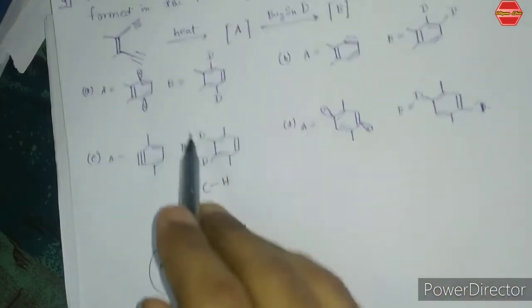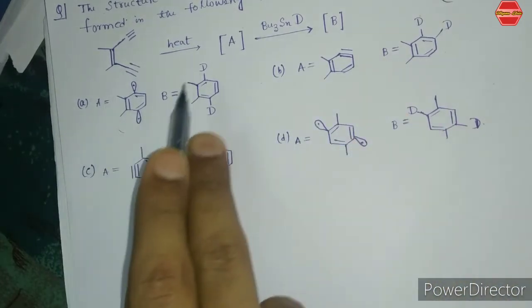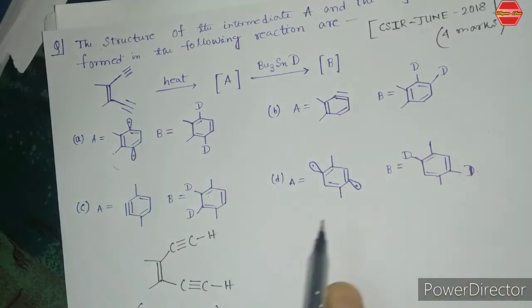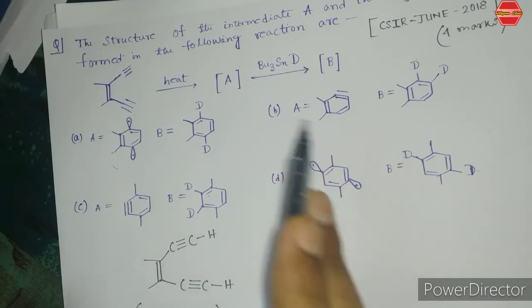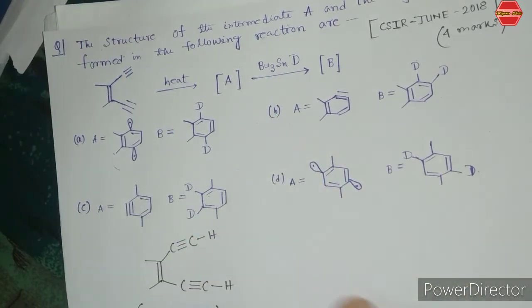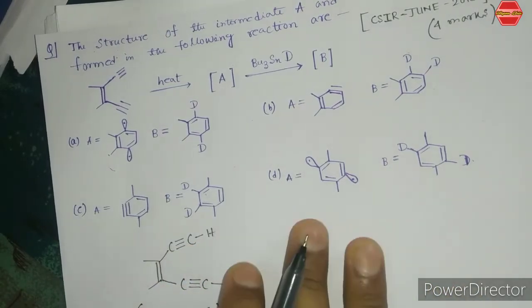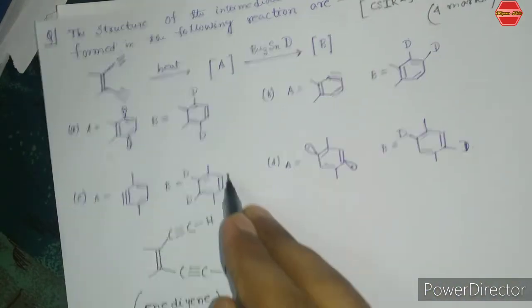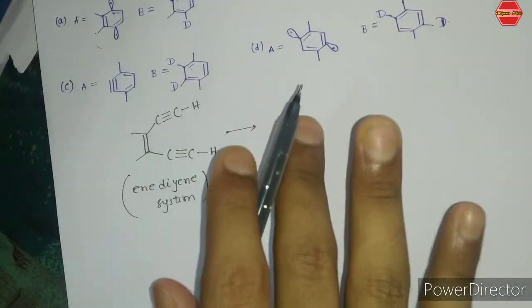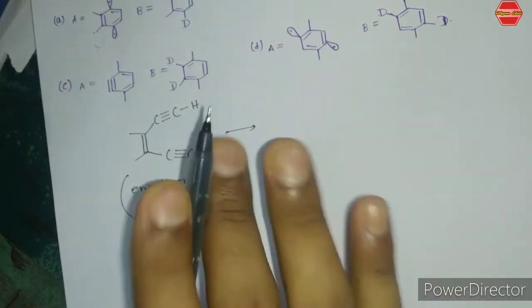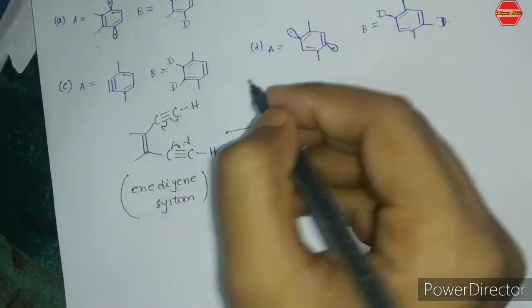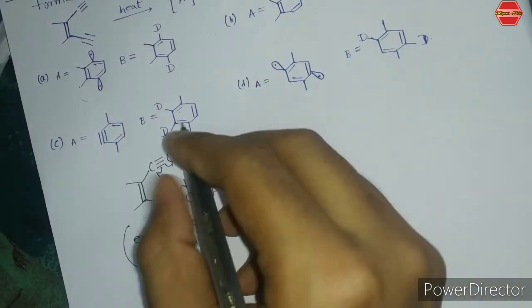Even if you look at the options given for intermediate A, all of them are aromatic structures, but you have to find which is the correct intermediate. Now, this type of compound and this name reaction proceeds via a radical pathway. Let me write here how the radical process occurs.